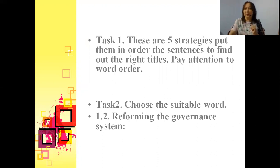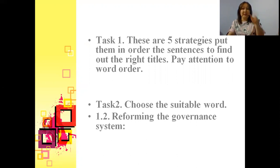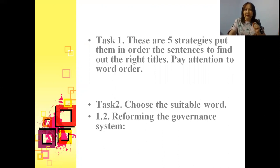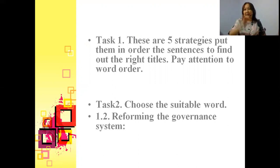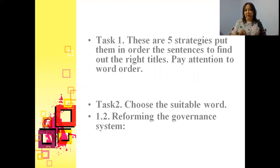Next, you are going to work with one of the strategies, which is number 1.2, titled 'Reforming the Governance System.' There you have some words related to the content of this strategy, and you need to put those words into the blanks.